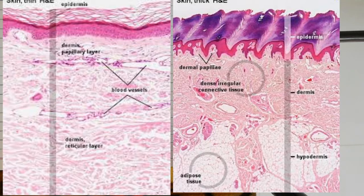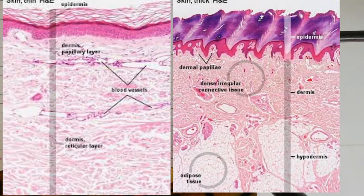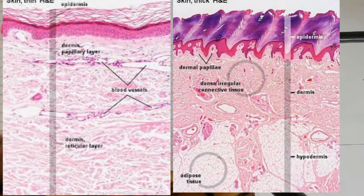In the thick skin diagram, you can see the stratified squamous keratinized epithelium, prominent dermal and epidermal papillae, and hair follicles that are absent. In the thin skin diagram, you can see non-keratinized epithelium, very shallow dermal and epidermal papillae, and the hair follicle with the sebaceous gland. Thank you so much.